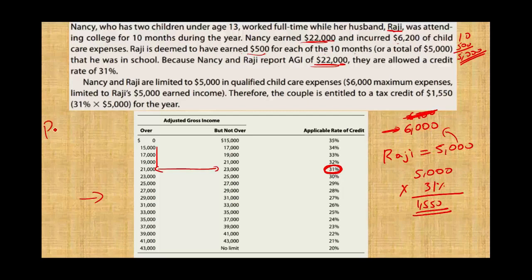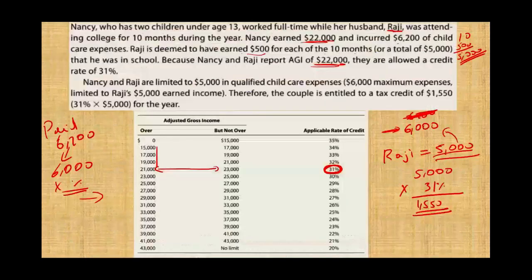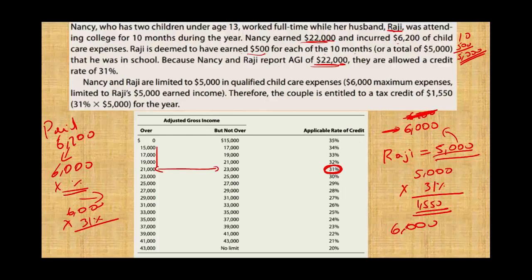To summarize: they paid $6,200 in care costs. Generally, with two children and both parents working, you start at $6,000 maximum. But since Raji is only making $5,000, the eligible care costs cannot exceed the lower of the taxpayer's or spouse's earned income. If Raji were making $6,000 or more, you would take $6,000 times 31% for the credit. Because Raji only earned $5,000, you are limited to that lower earner figure.